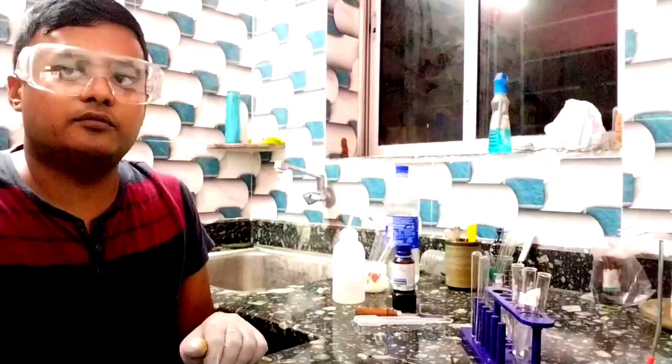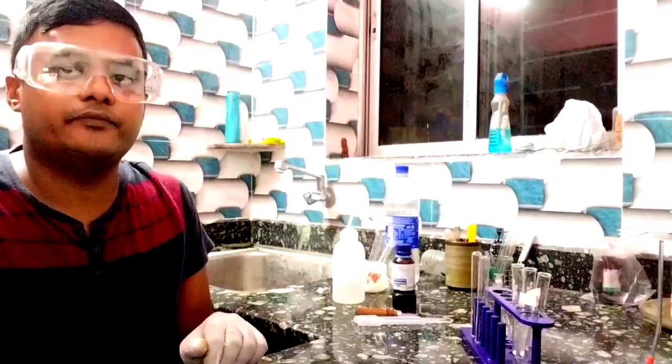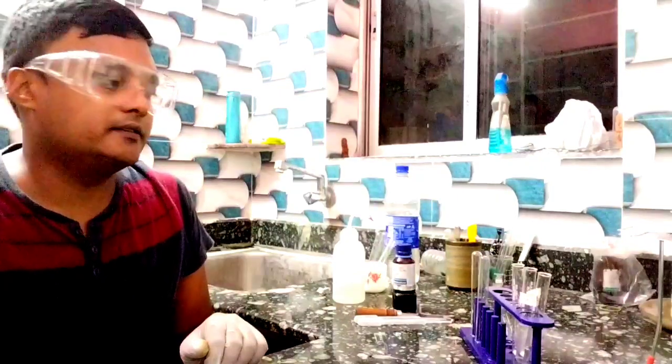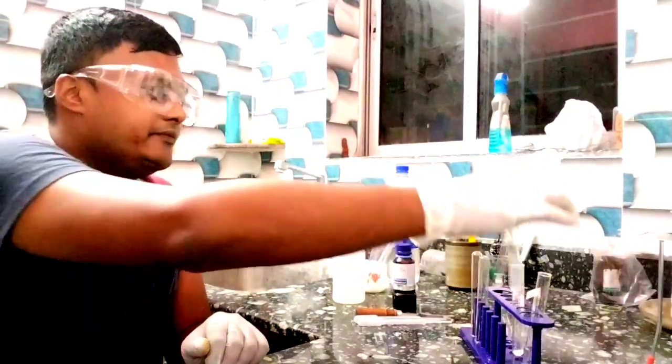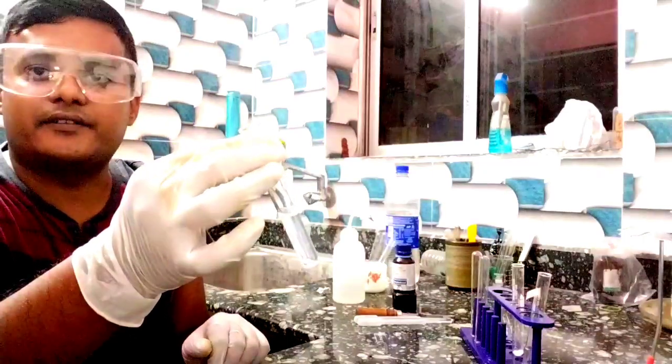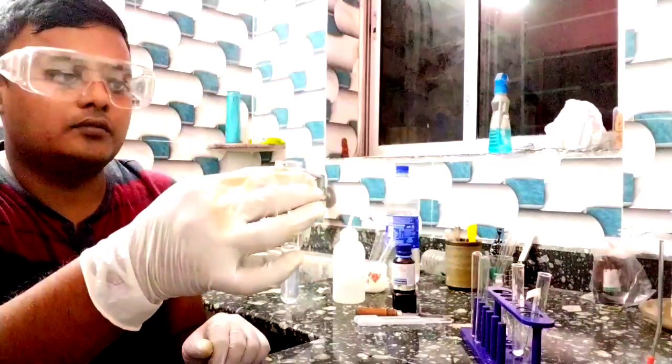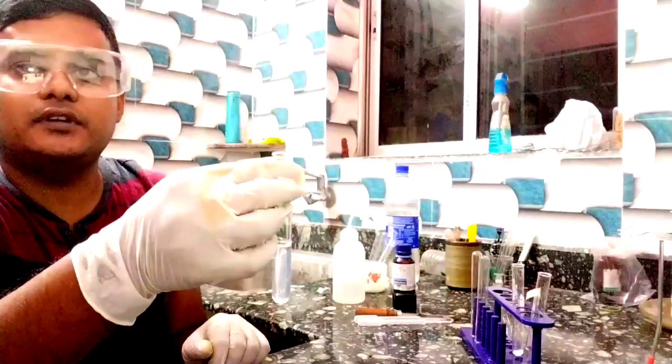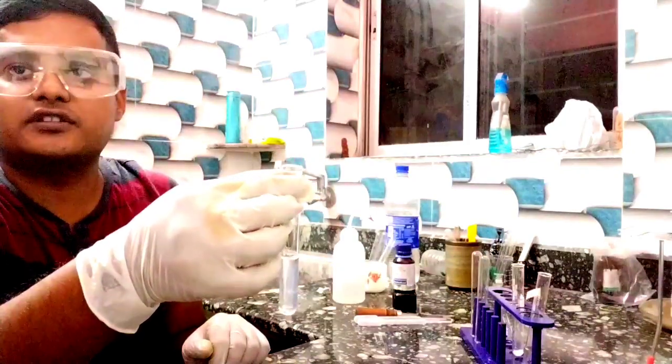Hi everyone, welcome to my channel. Today I will show you detection of lead. For the lead sample, I take lead nitrate. Now, how can we identify lead? If we add KI solution (potassium iodide), it will form a bright yellow precipitate of PbI₂ (lead iodide).